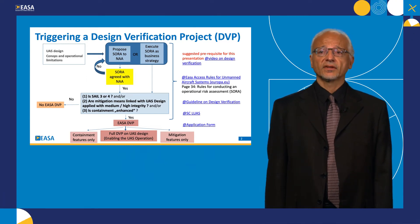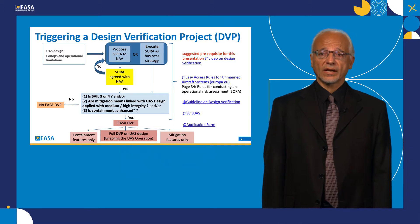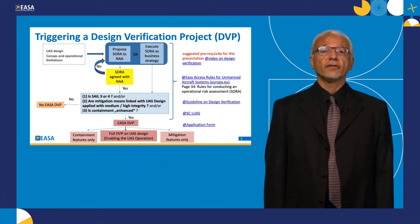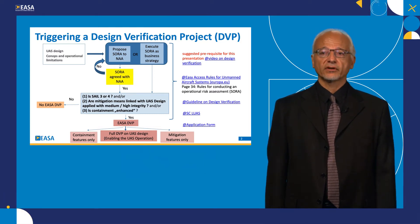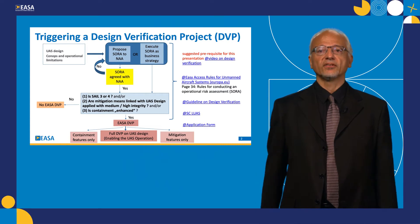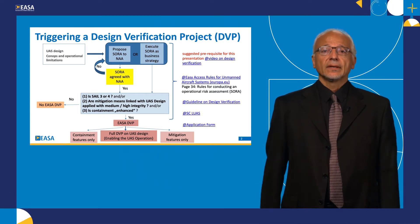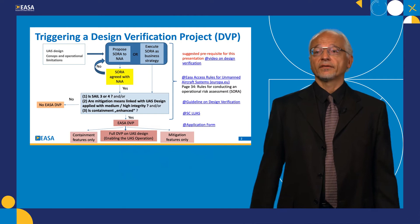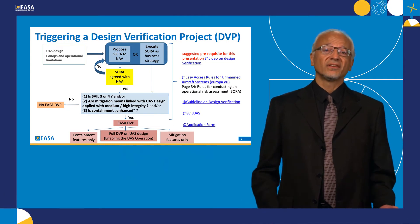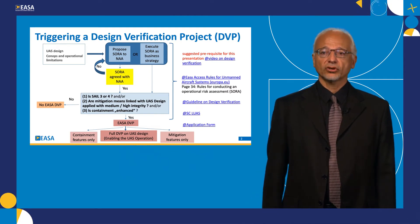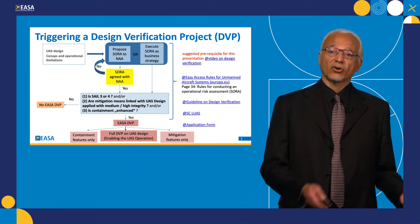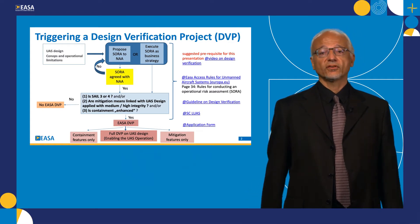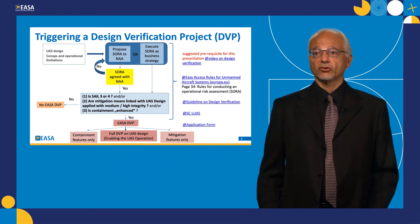The main case is the first one — SAIL three or four — which brings a full design verification project on the UAS design. In the second and third cases, you have a more contained verification project, either on the containment features of the UAS or on the mitigation means.